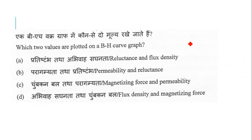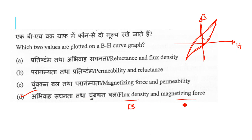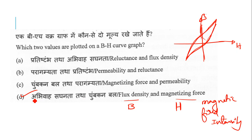The next question: which two values are plotted on a BH curve? The BH curve is shaped like a leaf. On this curve, B is the magnetic flux density and H is the magnetic field intensity. Magnetic flux density versus magnetizing force is the right answer. Magnetic flux density is B, and magnetizing force or magnetic field intensity is H.